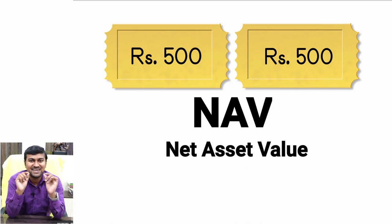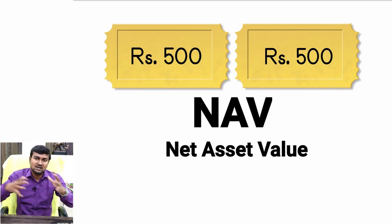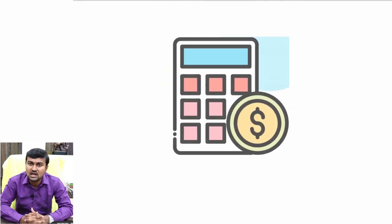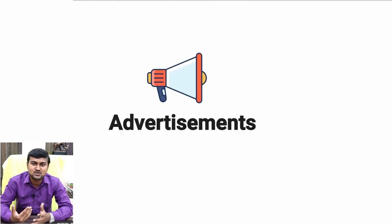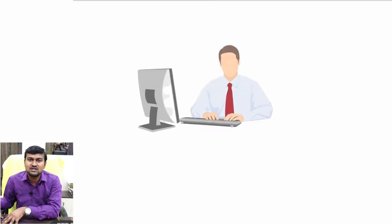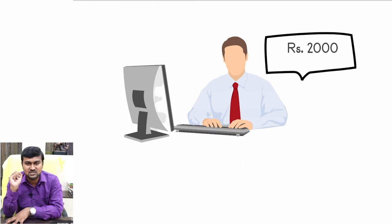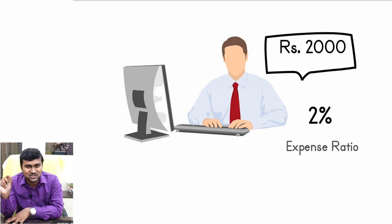Now there are some expenses involved in managing the fund. Larger fund houses like HDFC or SBI manage crores of rupees and obviously have advertising expenses, salaries, and so on. In our example, the fund manager charges 2000 rupees to manage 1 lakh rupees — that's 2 percent — and this 2 percent is called the expense ratio.